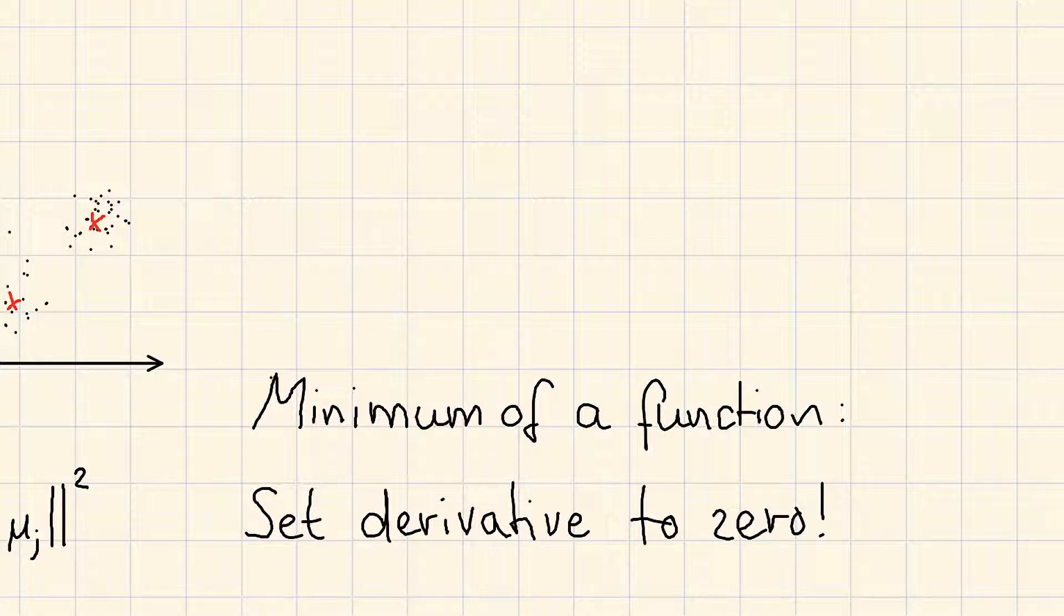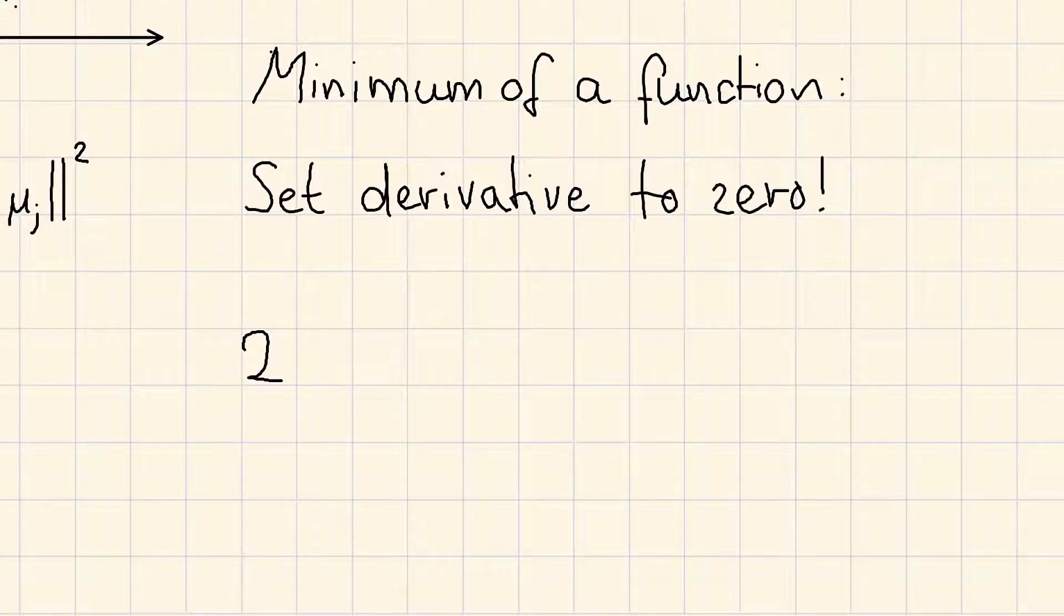Let's do that. The derivative of J would be 2 times the sum from n to capital N of rnk times (xn - µk).